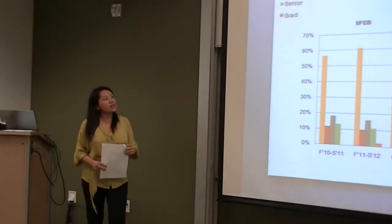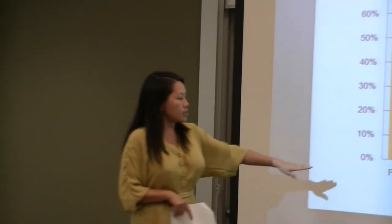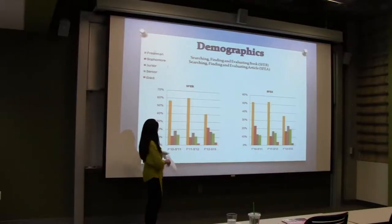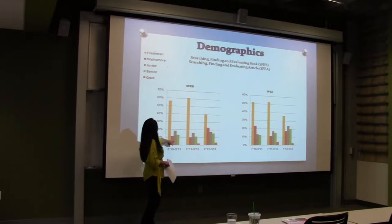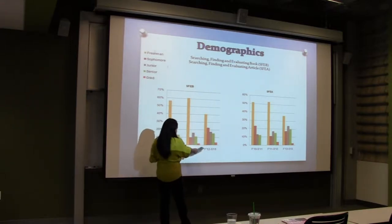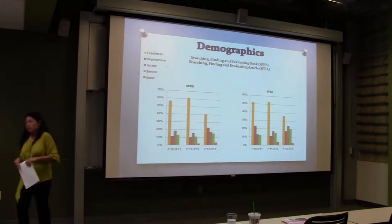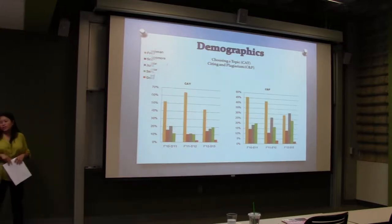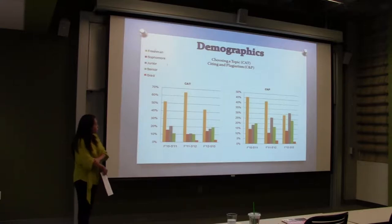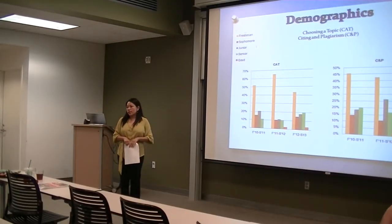Here are our demographics showing freshmen through grad students who actually take these modules. According to the legend, we have freshman, sophomore, junior, and senior levels. As we get into the more recent years, graduate students have started taking them as well. For both the book and article modules and the citing and choosing a topic modules, the majority of our patrons are still freshmen, but the other groups are picking up too.